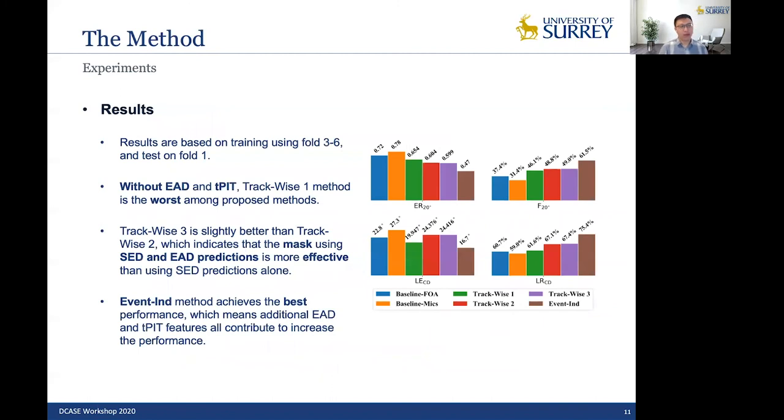And here is the result. The results are based on training using fold 3 to 6 and test on fold 1. So without EAD and TPIT, our trackwise 1 method is the worst among proposed methods. That is reasonable because we cannot assign the correct label to corresponding tracks. And for trackwise 3, it is slightly better than trackwise 2, which indicates that the mask using SED and EAD predictions is more effective than using SED predictions alone. And for event int method, it achieves the best performance, which means additional EAD and TPIT features all contribute to increasing the performance.